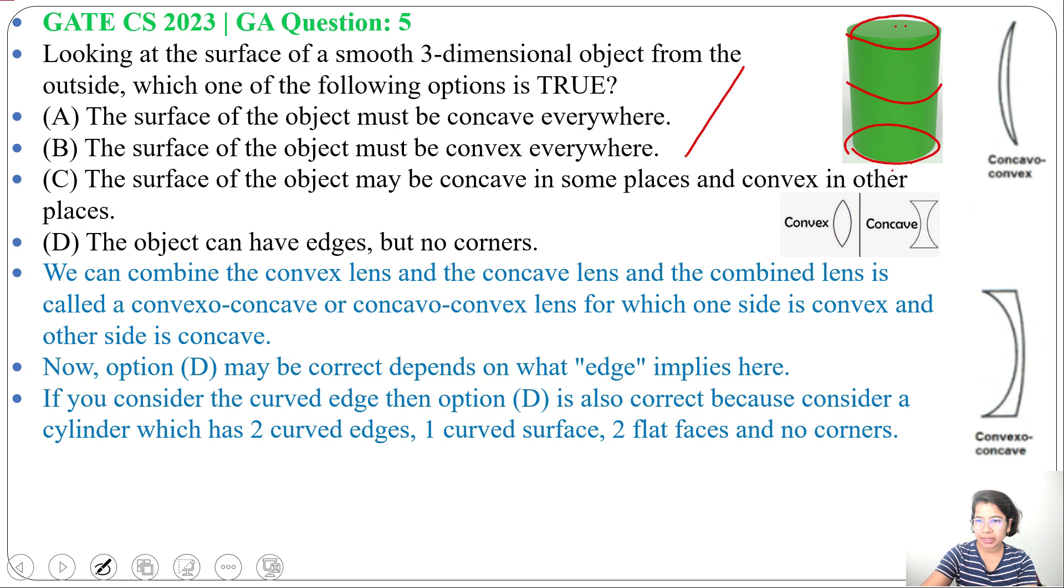Suppose we take an example of a three-dimensional cone. Then in that cone there is a corner. So it depends on the three-dimensional object. In case of a cylinder, there are no corners, but in case of a cone, there are corners.